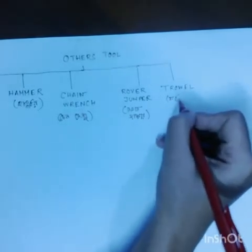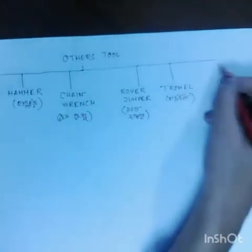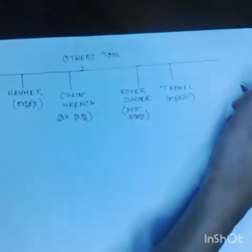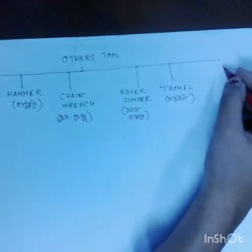Next is trowel. Trowel is for concrete work. This tool allows us to mix cement. In this tool we have some sort of use for mixing, but we do not need to paste it.